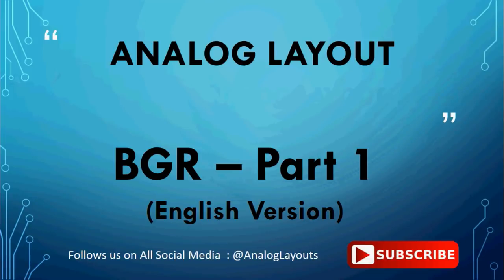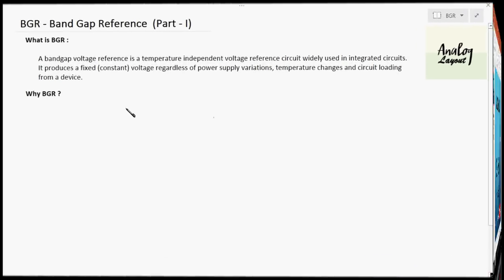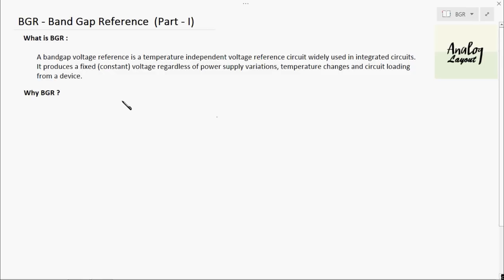Welcome to analog layouts. In today's video, we are going to discuss the topic of BGR. Band gap reference is the definition of BGR. The use of BGR is to provide a constant output voltage regardless of input power supply variation and device temperature variation. The block which gives constant output voltage regardless of temperature and power supply variation is called band gap reference.